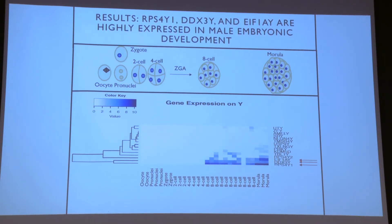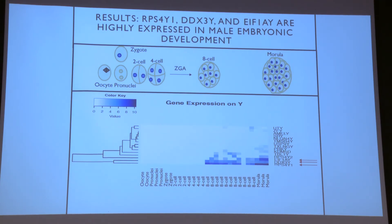Moving on to the Y chromosome, we have RPS4Y1, DDX3Y, and EIF1AY that are highly expressed. But one major difference is that they don't start becoming expressed until a lot later — precisely around the eight-cell stage. Between four-cell and eight-cell is when zygote genome activation occurs, when the embryo no longer transcribes maternal RNA but makes its own. So prior to that, when it is transcribing maternal RNA, it's obviously not going to express Y chromosome genes since the mother doesn't have a Y chromosome. There's also a sample showing no expression, which is likely just a female sample — we didn't have sex data on these samples.